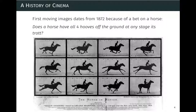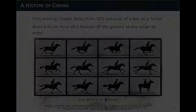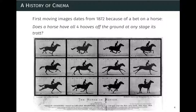What you see is different cameras put in sequence, each triggered as the horse passed in alignment with that camera. When you play that back, you can see at any given time whether the four hooves were indeed off the ground. The answer is yes — if you look at the right frame, all four hooves are off the ground. Technically it's not a film, but it very much looks like one.